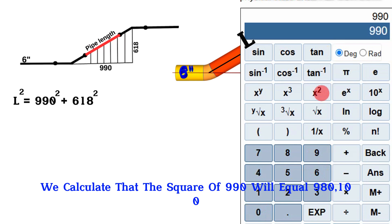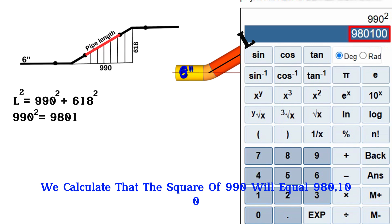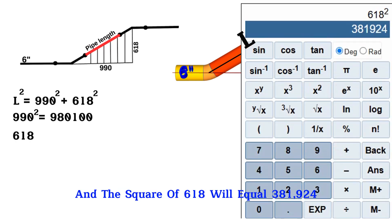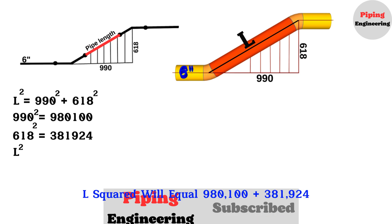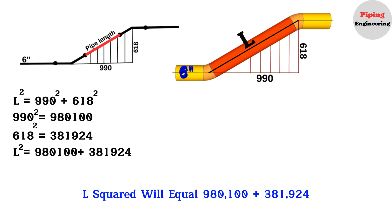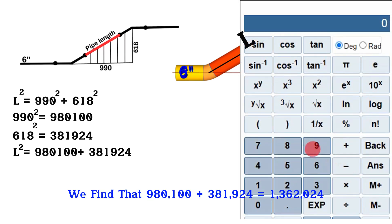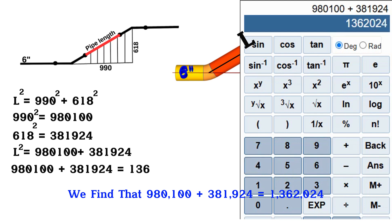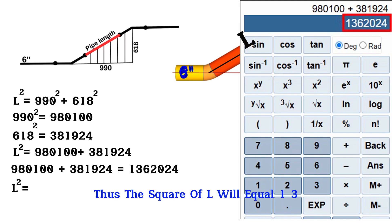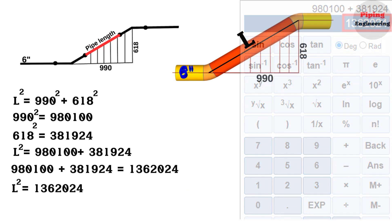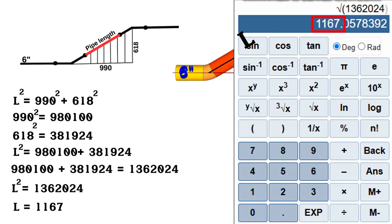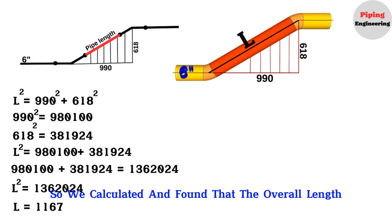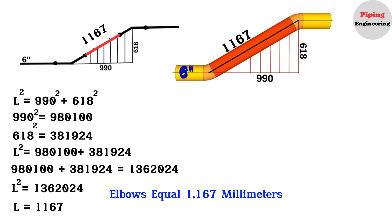Using a calculator, we find that 990 squared equals 980,100 and 618 squared equals 381,924. So L-squared equals 980,100 plus 381,924, which gives us 1,362,024. Taking the square root using a scientific calculator, L equals 1,167. Therefore, the overall center-to-center distance between the two elbows is 1,167 millimeters.